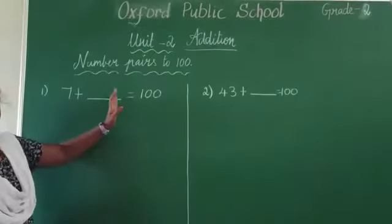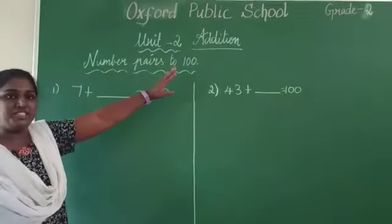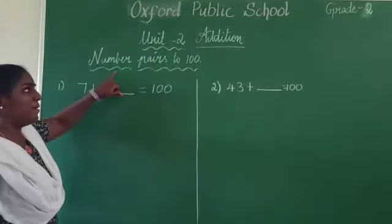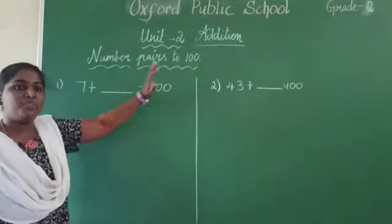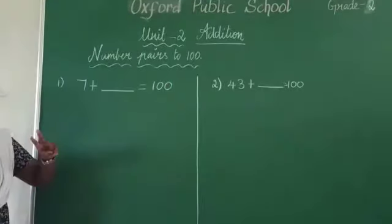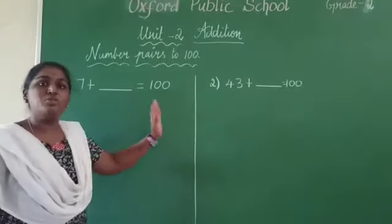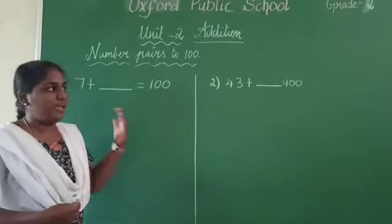Hello kids, we are already learning unit 2 addition. Now we are going to see number pairs to 100. Already I have posted 2 sums for that. Today again I am going to do 2 more examples for you to make it clear.